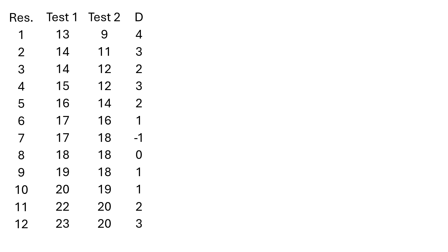The next step is to find the mean and the standard deviation of this difference column — not the original data, but the differences we computed. What we're after is to solve the t-statistic. The formula requires the mean (x-bar sub d) and the standard deviation (s sub d) of the differences, and n is the number of participants, which is 12 in this case.